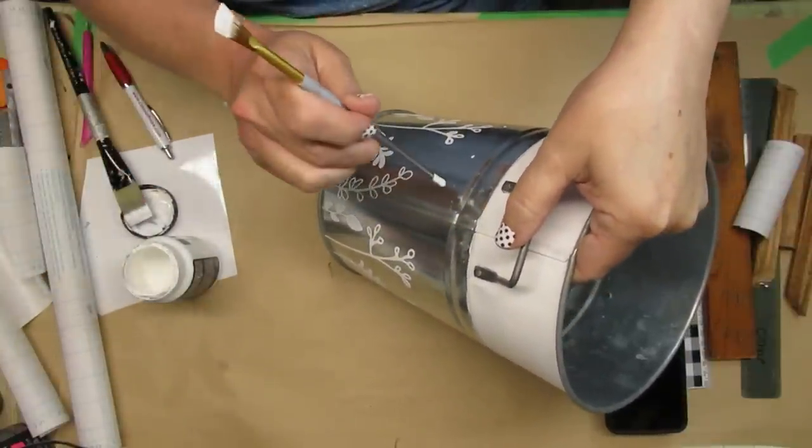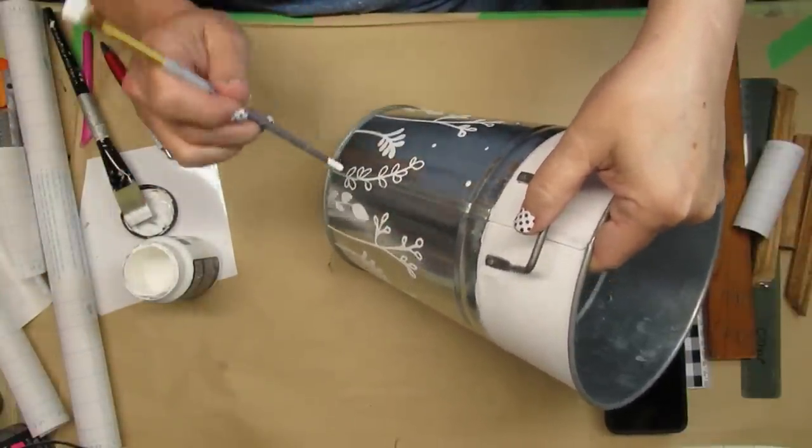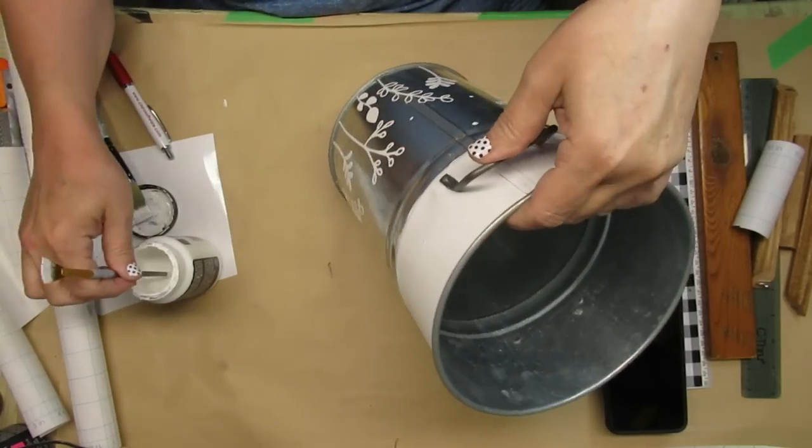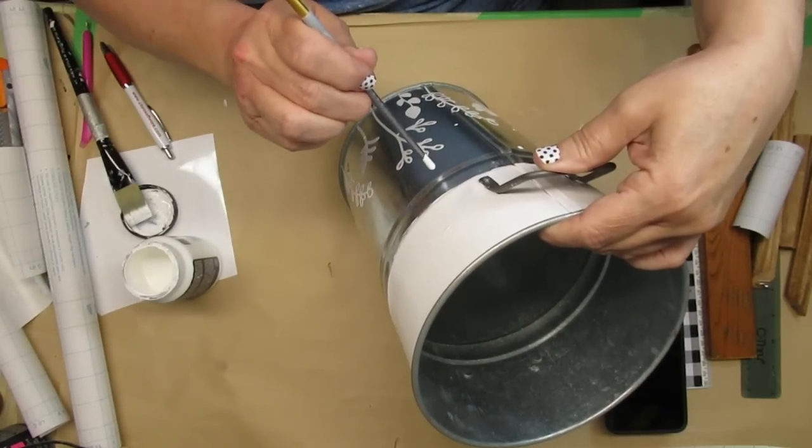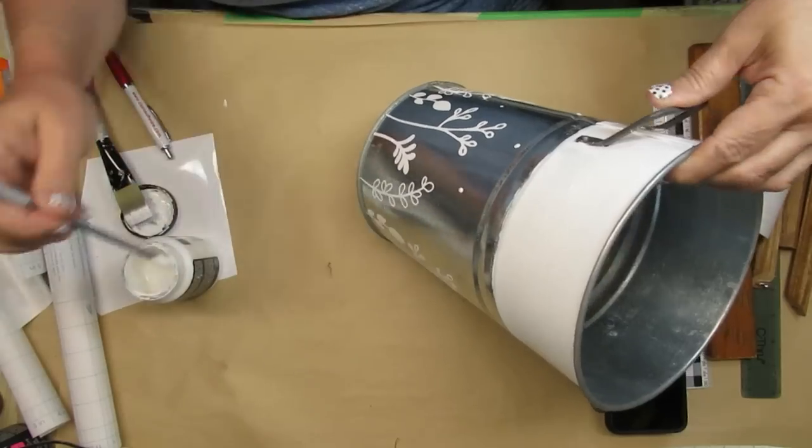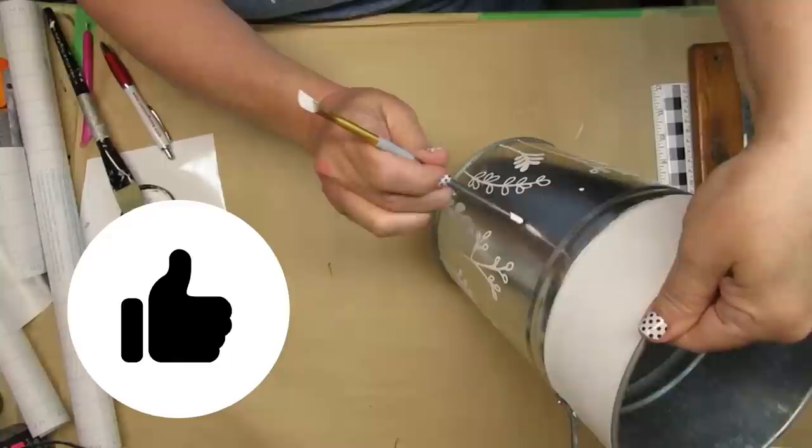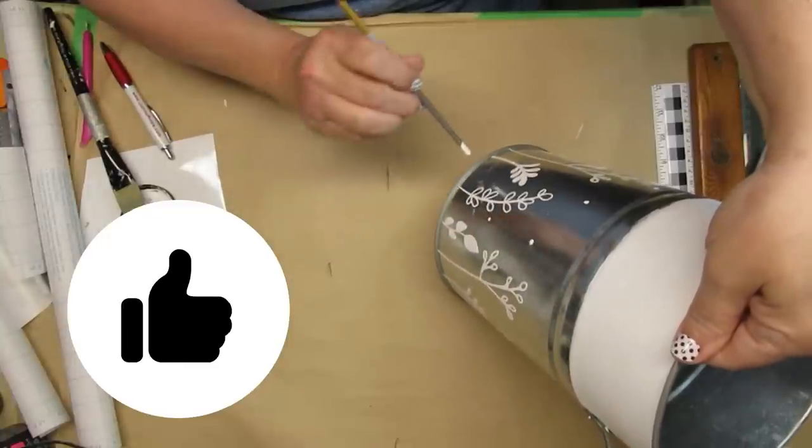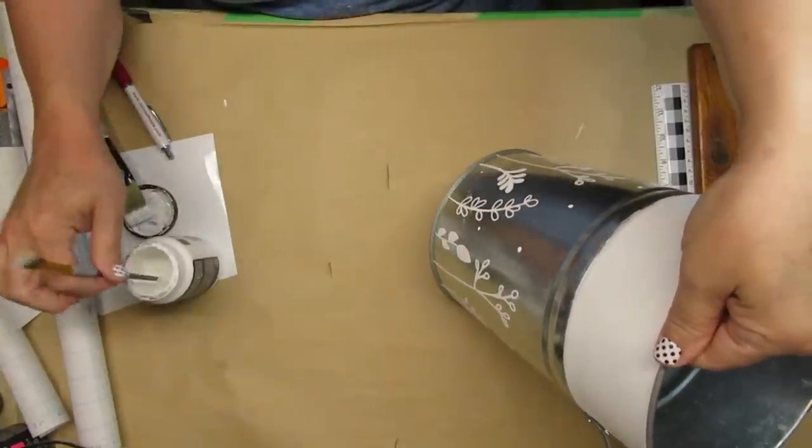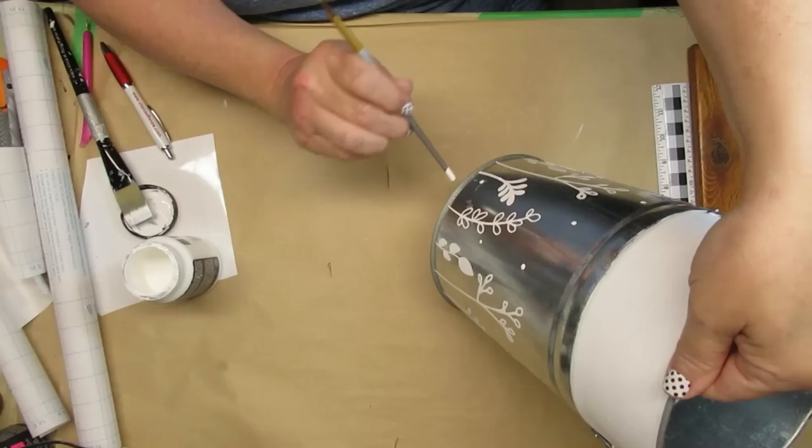I left the handles metal because I thought the contrast was really nice. Now I'm just taking the end of my paintbrush and dipping it into the chalk paint and doing some random dots all the way around the tin. There were some areas that were old and kind of stained, they were sort of yellowy looking and not rusty or anything, so I wanted to try and camouflage a little bit of that.